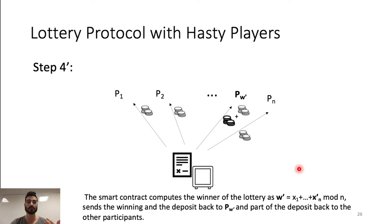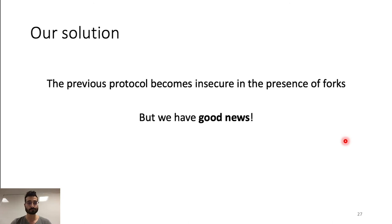So what an adversary can easily do is generate a value x'n such that the winner w is its own index. As we saw, the previous protocol becomes insecure in the presence of forks, but we have good news.